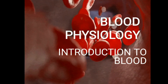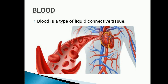So what is blood? It is a type of liquid connective tissue. Blood is a body fluid in the circulatory system of humans and other vertebrates. It delivers necessary substances such as nutrients and oxygen to the cells. The other functions of blood are mentioned in the upcoming slides.